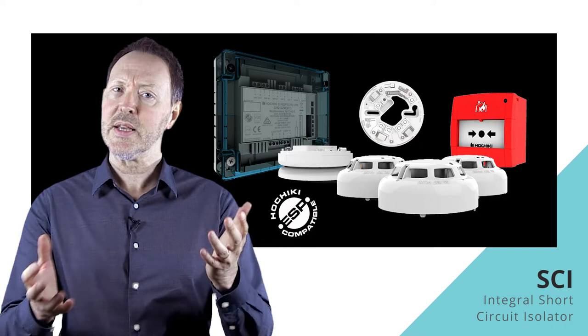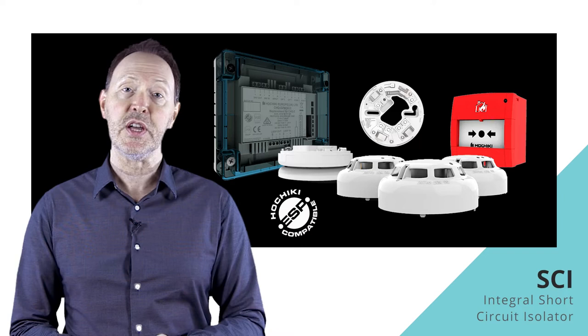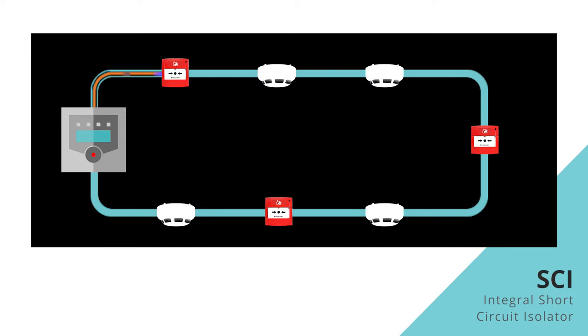On a healthy addressable fire system, the voltage from the fire control panel is driven one way around the loop, powering devices and carrying data. Loop cables can be accidentally damaged by tools or other equipment, particularly if not mechanically protected by conduit. If the positive and negative conductors within the cable come into contact with each other, that voltage level drops. This is a short circuit.